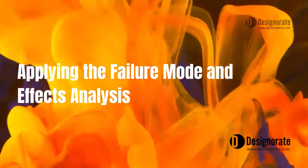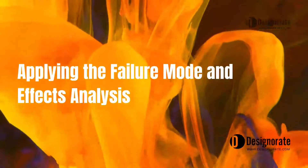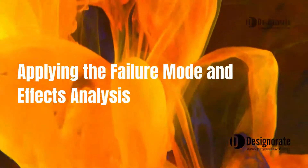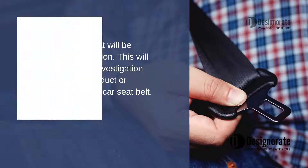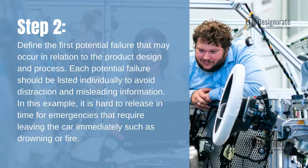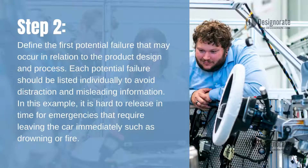Applying the failure mode and effects analysis. Step 1: Define the product that will be analyzed and its function in order to focus the investigation. For example, car seat belt. Step 2: Define the first potential failure that may occur. Each potential failure should be listed individually to avoid distraction. In this example, it is hard to release in time for emergencies that require leaving the car immediately, such as drowning or fire.